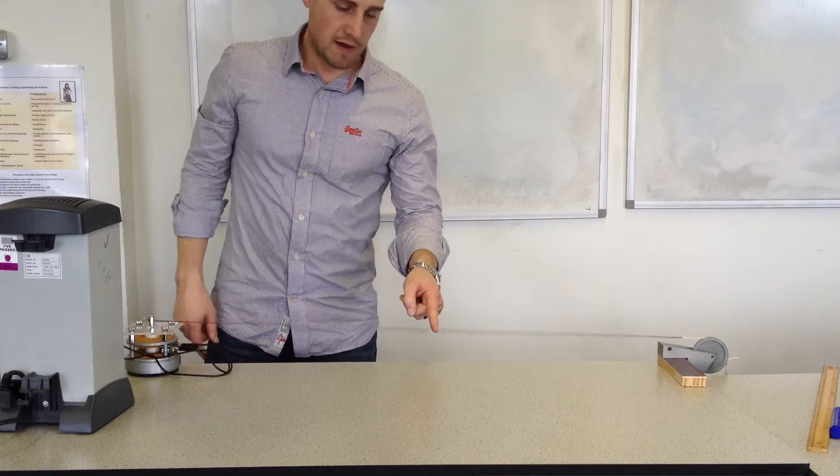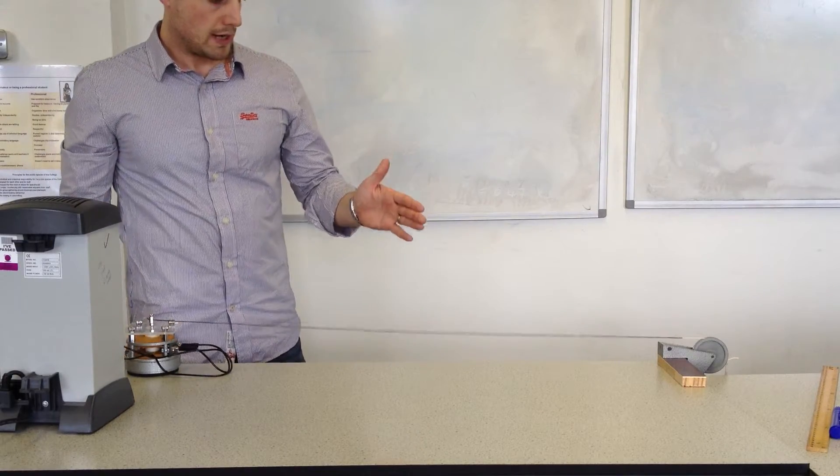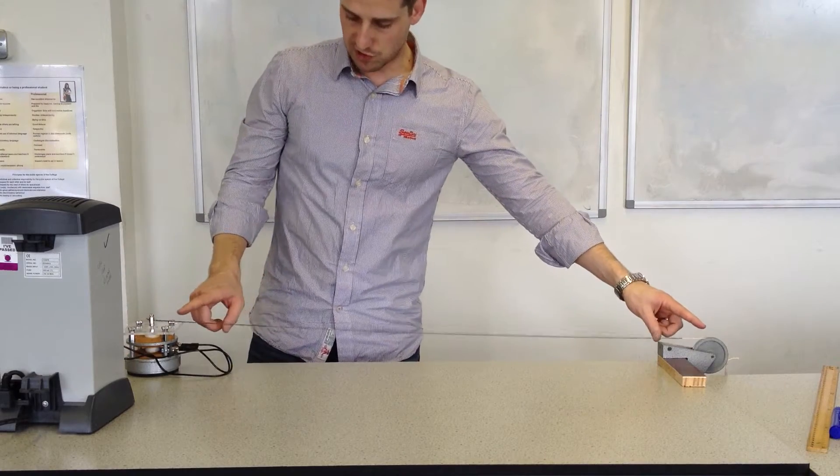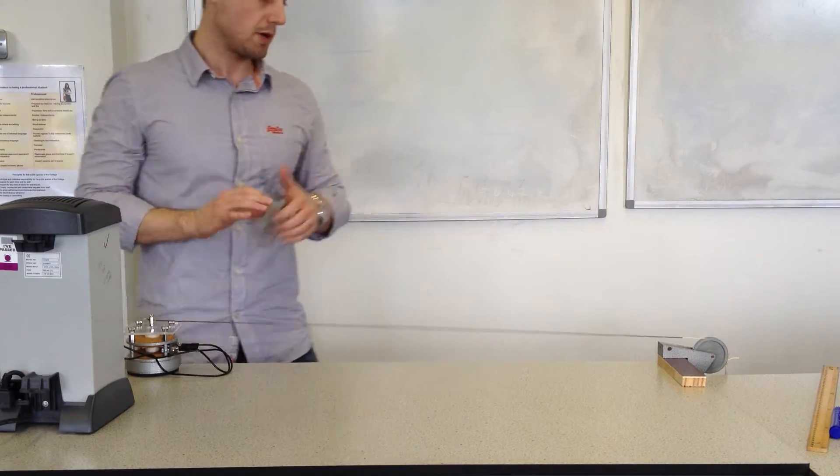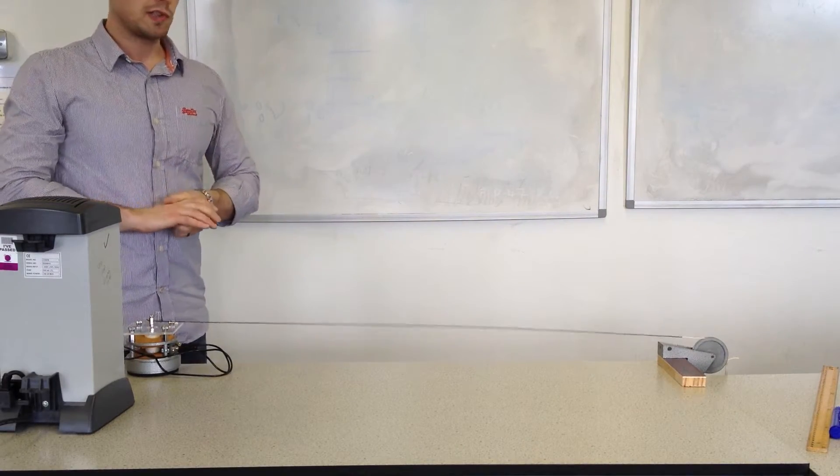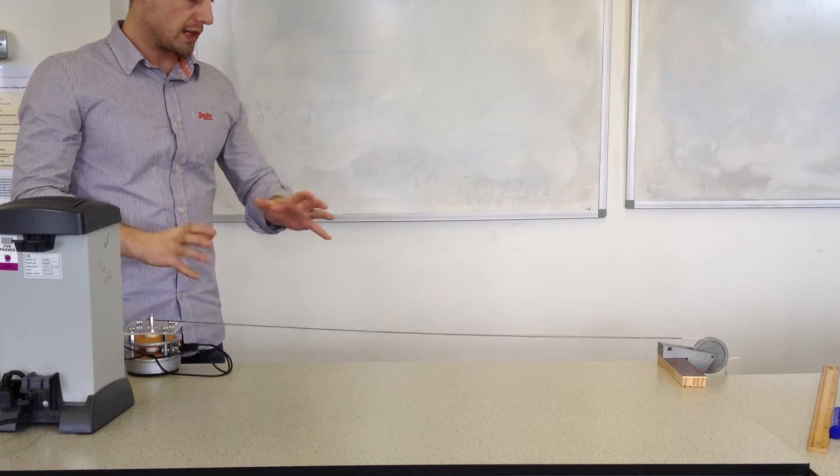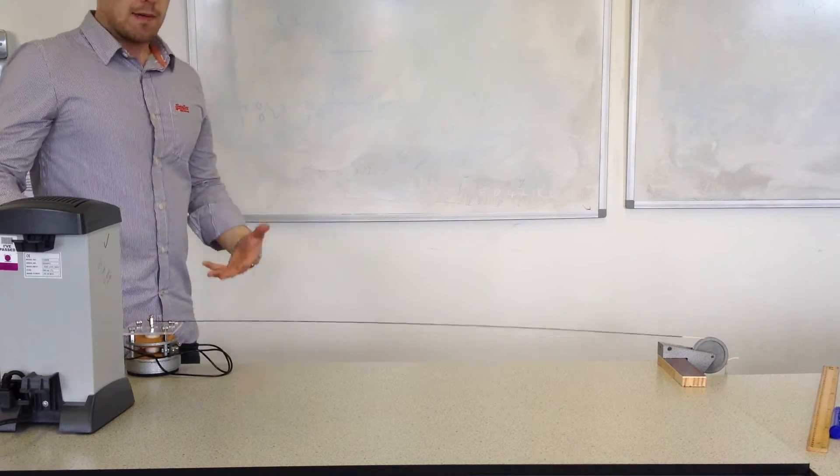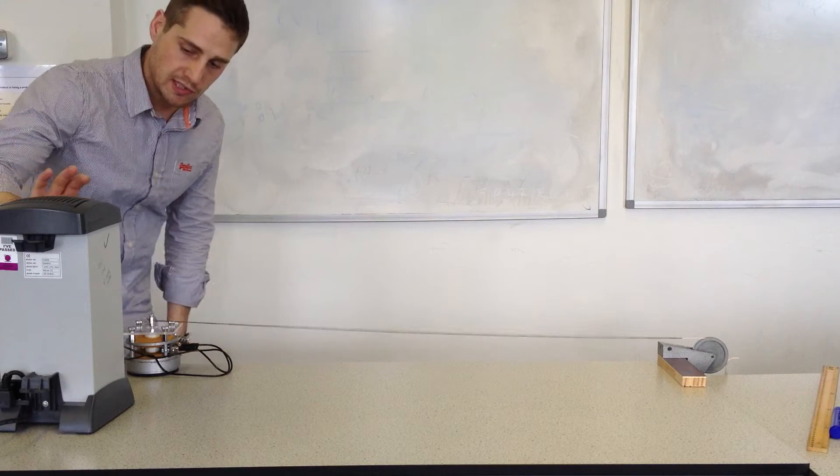And so this place where we have maximum amplitude we call an antinode. And these two positions at either end where there's zero amplitude, zero displacement all the time, we call those nodes. I'm now going to continue to increase the frequency.